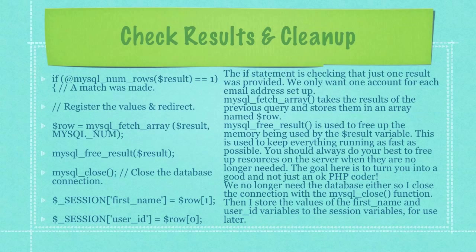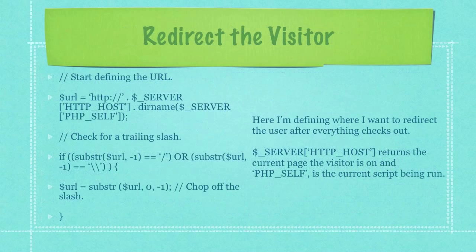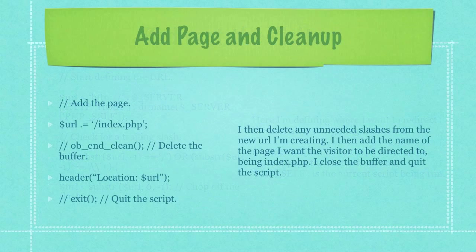Then I store the values of the first name and user ID variables to the session variables for use later. Here I'm defining where I want to redirect the user after everything checks out. When I use the key HTTP host in the array server, it will return the current page the visitor is on and PHP self is the current script being run.